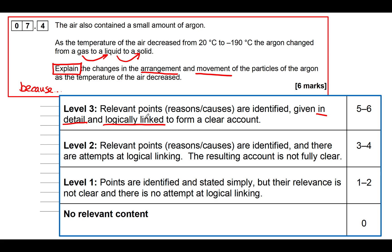The common thread to all six-mark questions is putting things in a logical order — that's why writing a plan pays off. To get five or six marks, your answer must be in detail and logically linked. The difference between level two and level three is the amount of detail and the quality of logical linking. Level two — which should be accessible to most students — earns three or four marks.